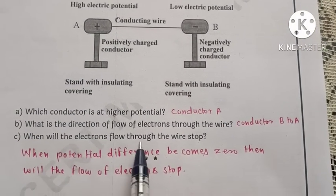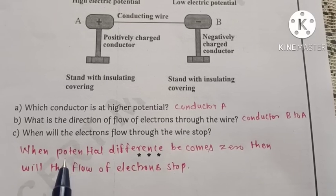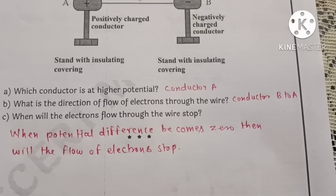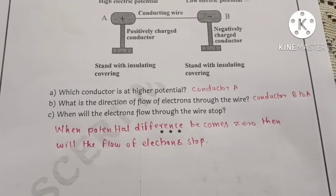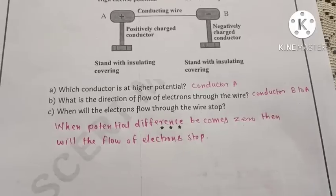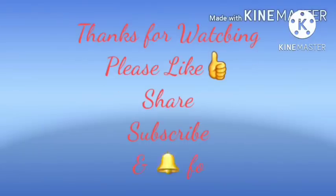When will the electron flow through the wire stop? The answer is when the potential difference becomes zero, then the flow of electrons will stop. So, did you like the video? Please like, share, and don't forget to subscribe. Thank you. All the best!